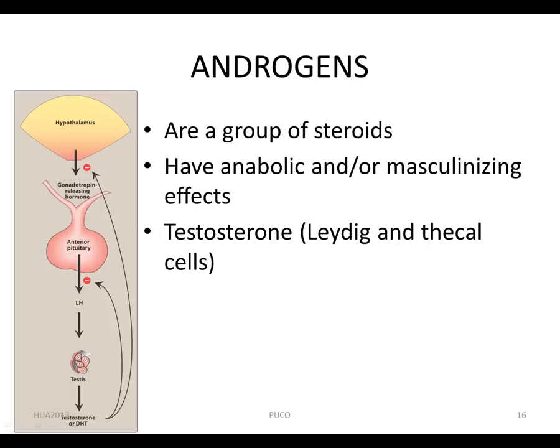Androgens are a group of steroids that have anabolic and masculinizing effects in both males and females. Testosterone, the most important androgen in humans, is synthesized by Leydig cells in the testes and in smaller amounts by thecal cells in the ovary of the female and by adrenal glands in both sexes.